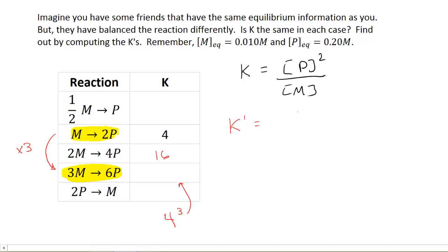K prime will equal P to the sixth divided by M cubed, but that's just equal to P squared over M, all raised to the third power. This is once again equal to K, our original K, raised to the third power. So our answer should be four to the third, which is 64.